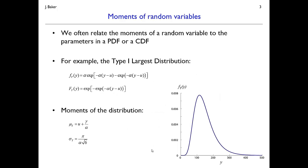These moments are nice descriptors of a random variable, and they often relate to the parameters in a probability density function or cumulative distribution function. For example, consider the Type 1 Largest distribution — its PDF and CDF contain parameters alpha and u that specify the location and shape of the distribution. It's straightforward to relate those u and alpha parameters to the mean value and standard deviation of the random variable. If we know the mean, standard deviation, and distribution type, we can compute the distribution parameters. Estimating the mean and standard deviation from data and converting them to distribution parameters is exactly the method of moments.